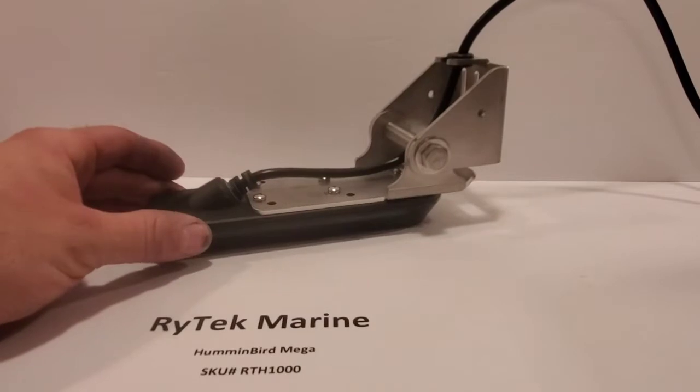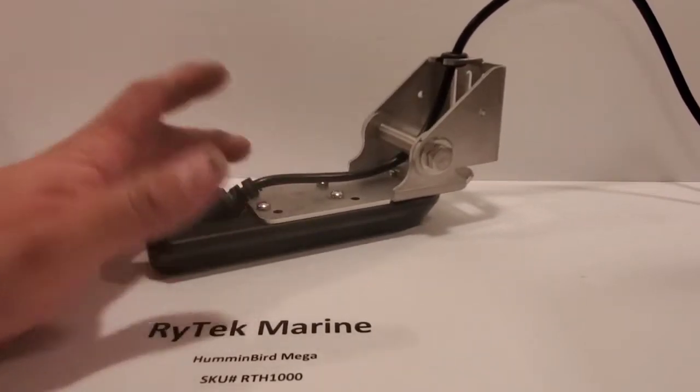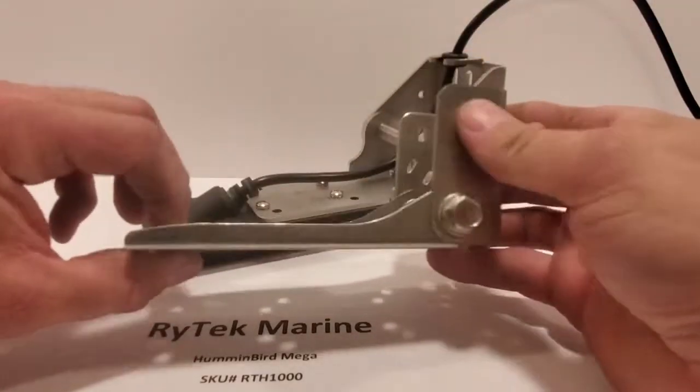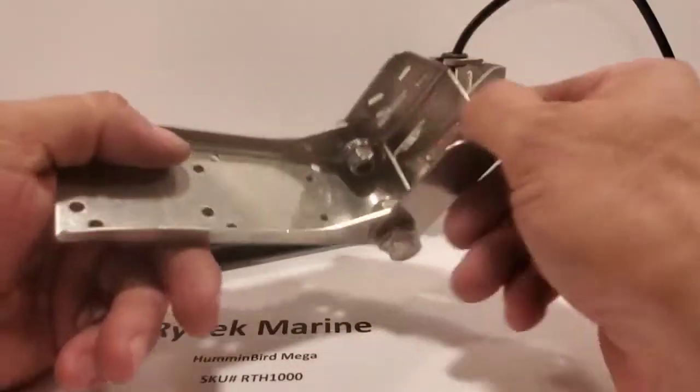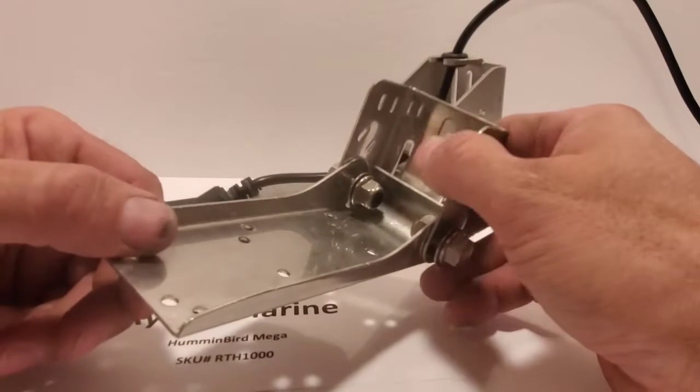This mount here is going to work with all the Mega Transducers that normally bolt onto the bracket. This one here is the factory mount. So you can see this one here doesn't have a through bolt, so you tighten it down. You have to physically lock bolts solid. It can still move because you're only dealing with the short bolt there.